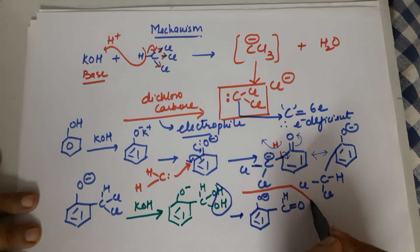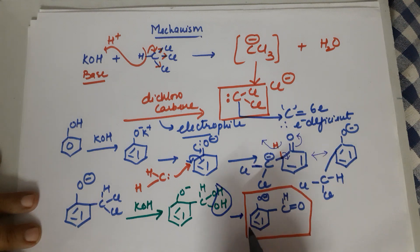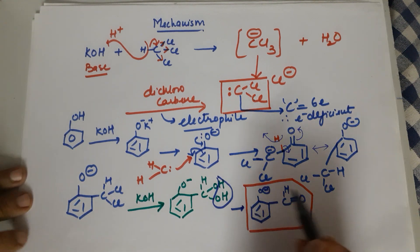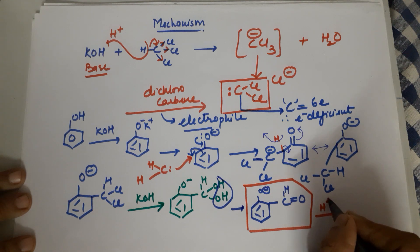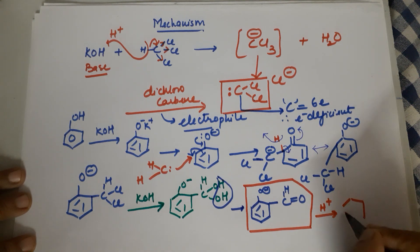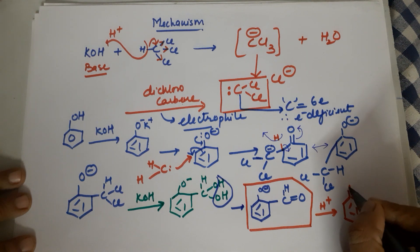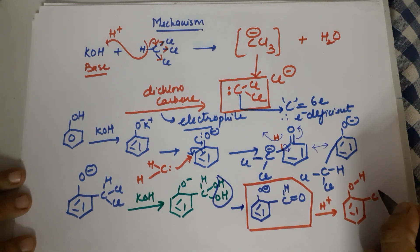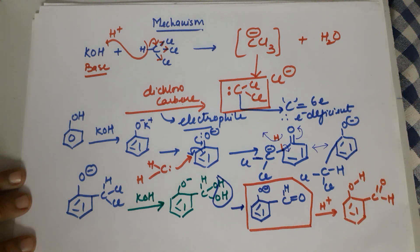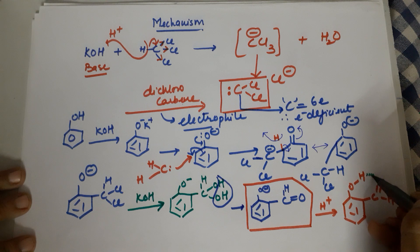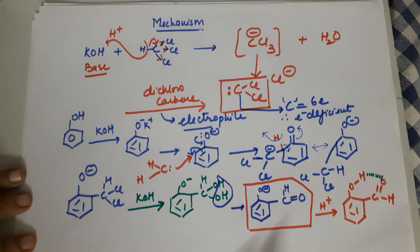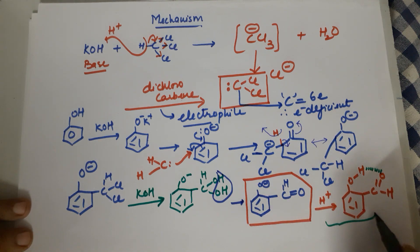So your product formed is this which then can easily get the H positive in the final acidic medium which you provided to give you the product which is orthohydroxybenzaldehyde, and this product is stable due to this intramolecular hydrogen bonding is the reason that you get major product as ortho and you have introduced the formyl group to phenol. So it is also called orthoformylation.